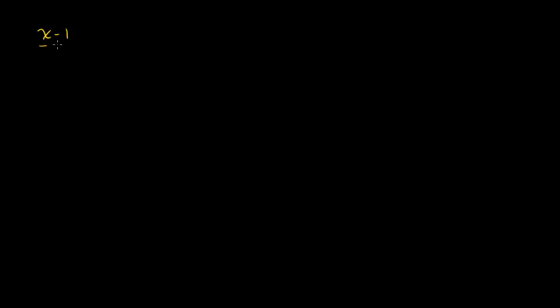We have x minus 1 over x plus 2 is greater than 0. I'm actually going to show you two ways to do this. The first way is, I think, the simpler way. But I'll show you both methods, and whatever works for you, well, it works for you.